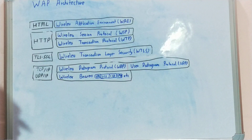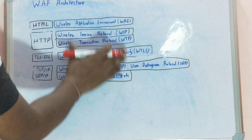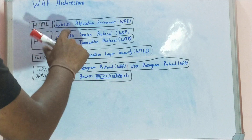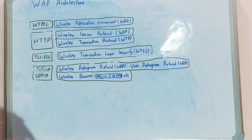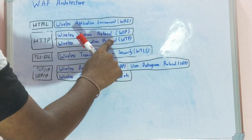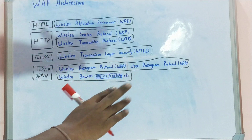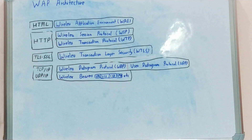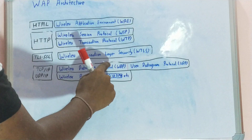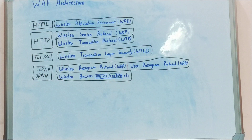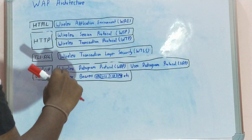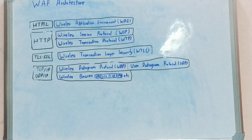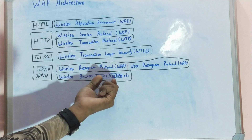The architecture is very basic and easy. Here are the set of protocols used in WAP and what they are based on. Wireless Application Environment makes use of HTML. Next is Wireless Session Protocol and Wireless Transaction Protocol. It is based on HTTP. Next is Wireless Transaction Layer Security, based on TLS/SSL. Next is Wireless Datagram Protocol and User Datagram Protocol — generally Wireless Datagram Protocol is preferred. And next is the wireless bearer, basically the kind of service like SMS, USSD, CSD, GPRS, etc.